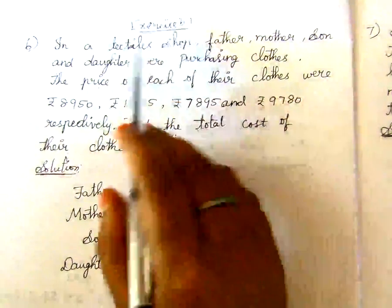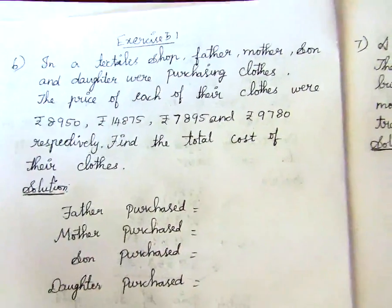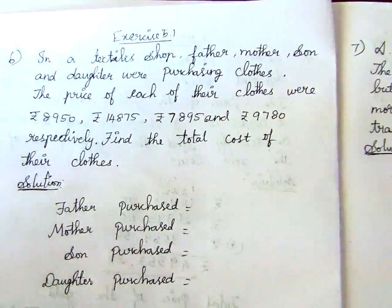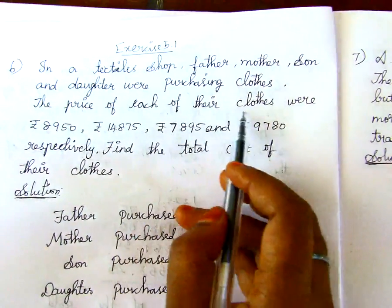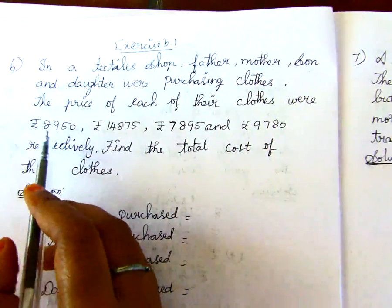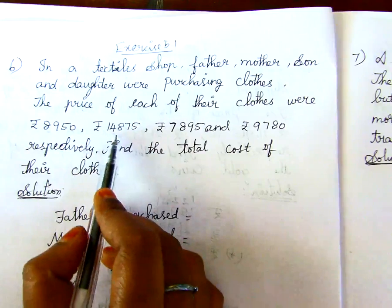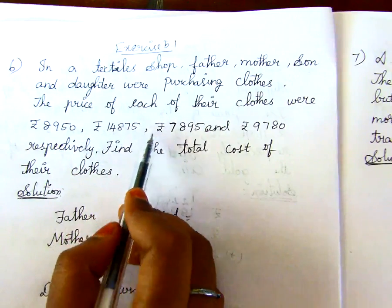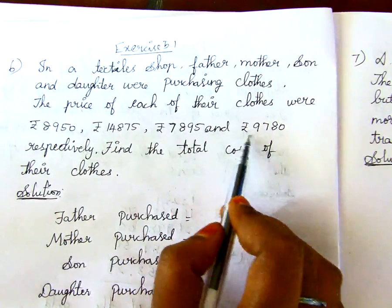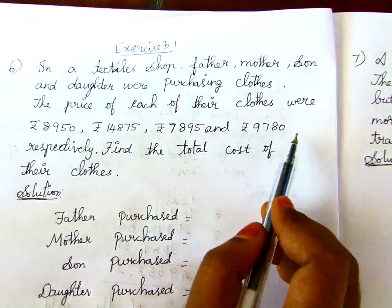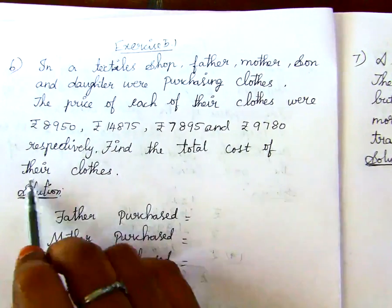Exercise 5.1 Question No. 6. In a textile shop, father, mother, son and daughter were purchasing clothes. The price of each of their clothes were Rs. 8,950, Rs. 14,875, Rs. 7,895 and Rs. 9,780 respectively. Find the total cost of their clothes.